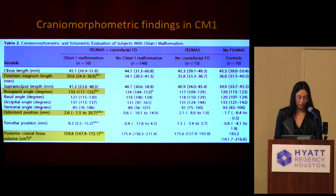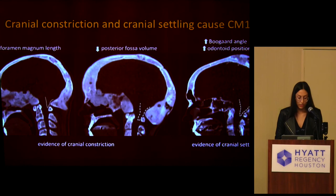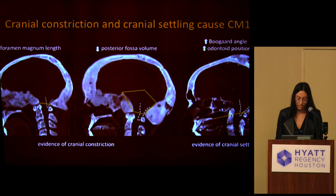A similar analysis in patients who had Chiari malformations compared to the same three groups showed significantly decreased foramen magnum length and decreased posterior cranial fossa volume, as well as an increase in Bougard's angle and an increase in odontoid position. Three of the patients with Chiari had also had basilar invagination. These findings suggest that both cranial constriction and cranial settling contribute to the development of Chiari in the FD population — the decreased foramen magnum length and decreased posterior fossa volume supporting cranial constriction, and the increase in odontoid position and Bougard's angle supporting cranial settling.